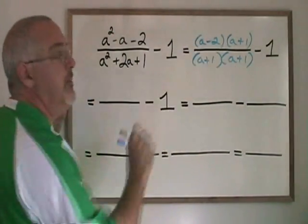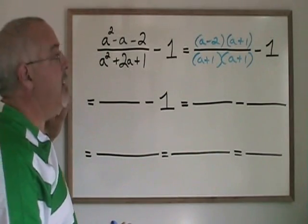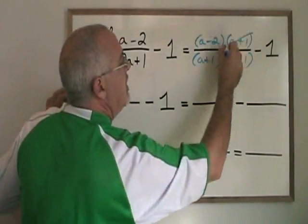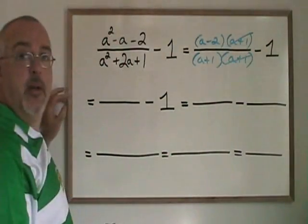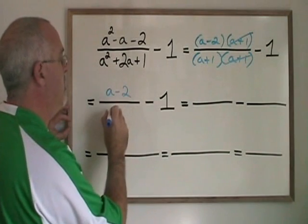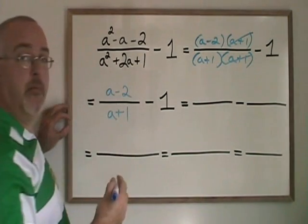But this fraction can be simplified. So if we want to make the rest of our problem easier, we cancel the a plus 1 on top and bottom right away. And we convert this question into a minus 2 over a plus 1 minus 1.